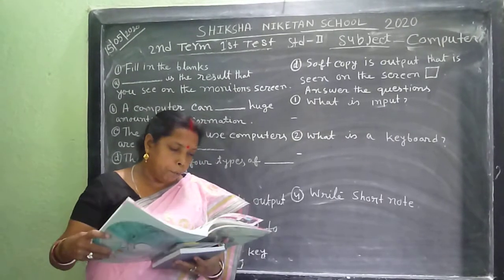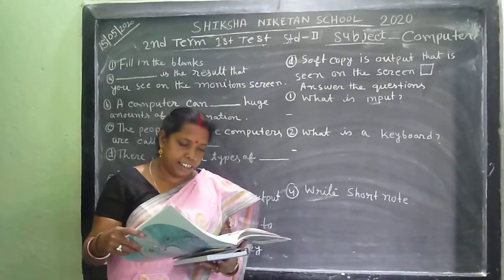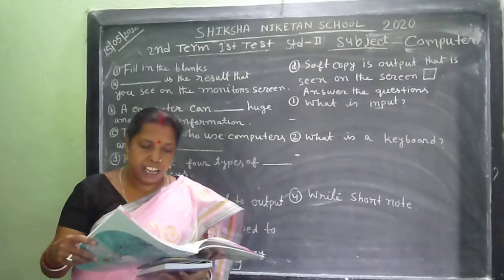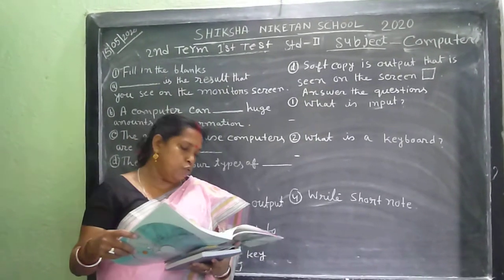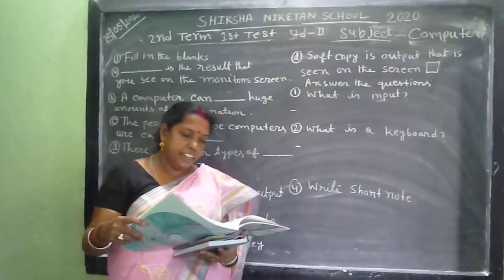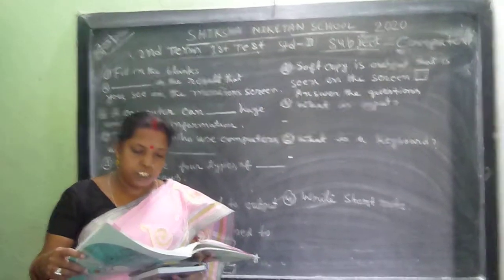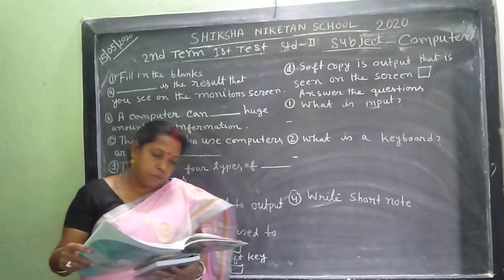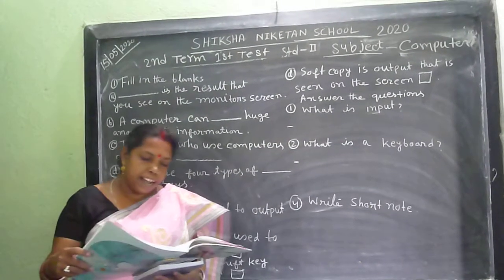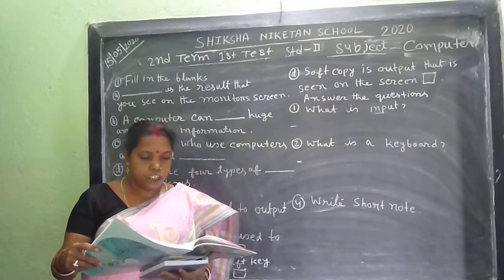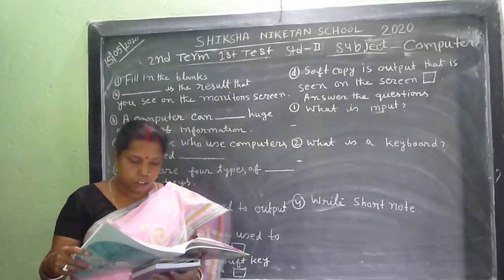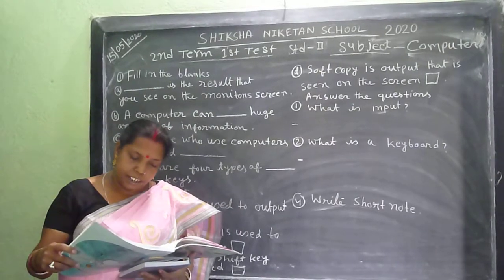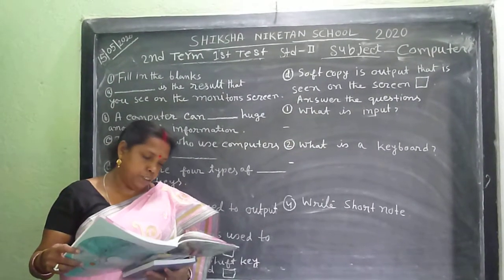Information: the computer processes the data that you enter into it and converts it into useful information. In other words, information is the result obtained by processing the data. The information processed by the computer is used by different people. These people are called end users, computer users, or simply users.